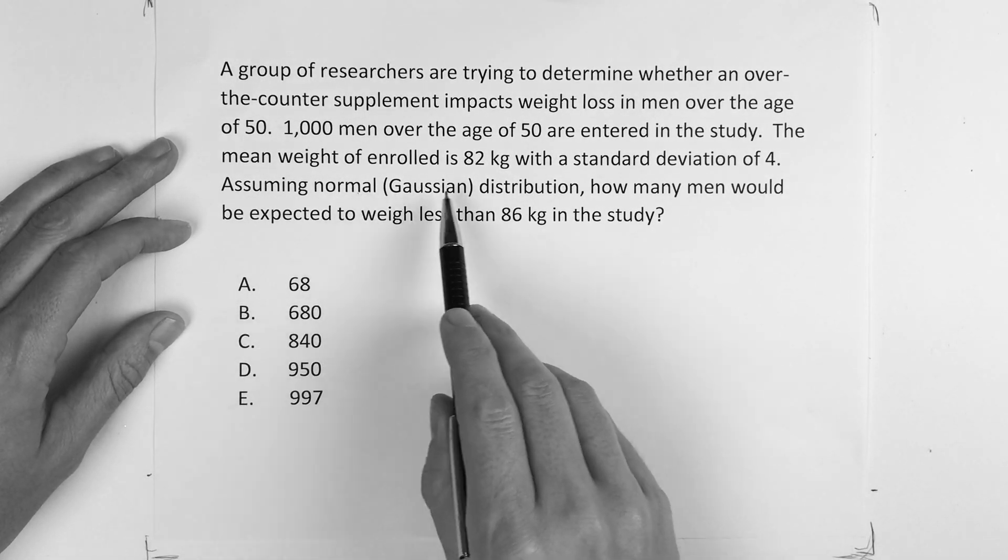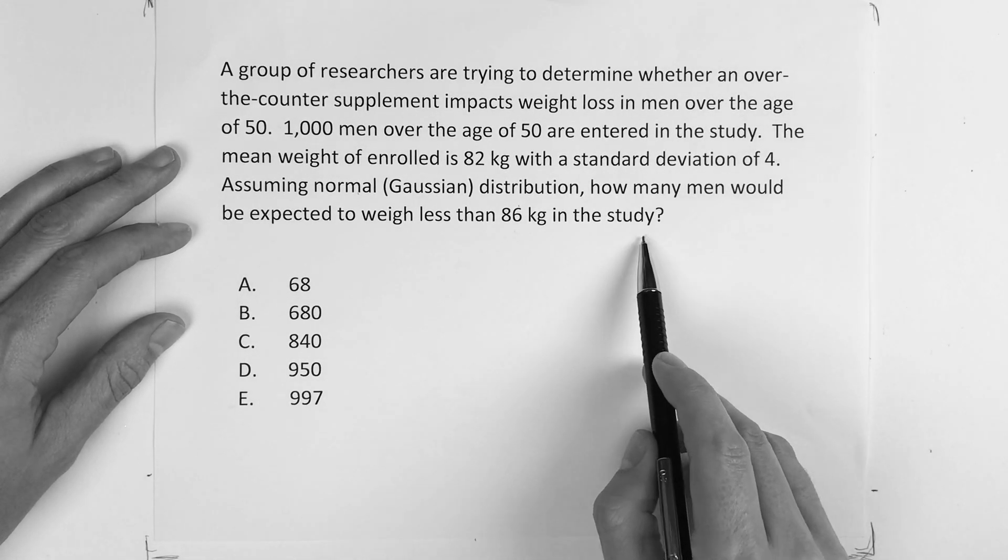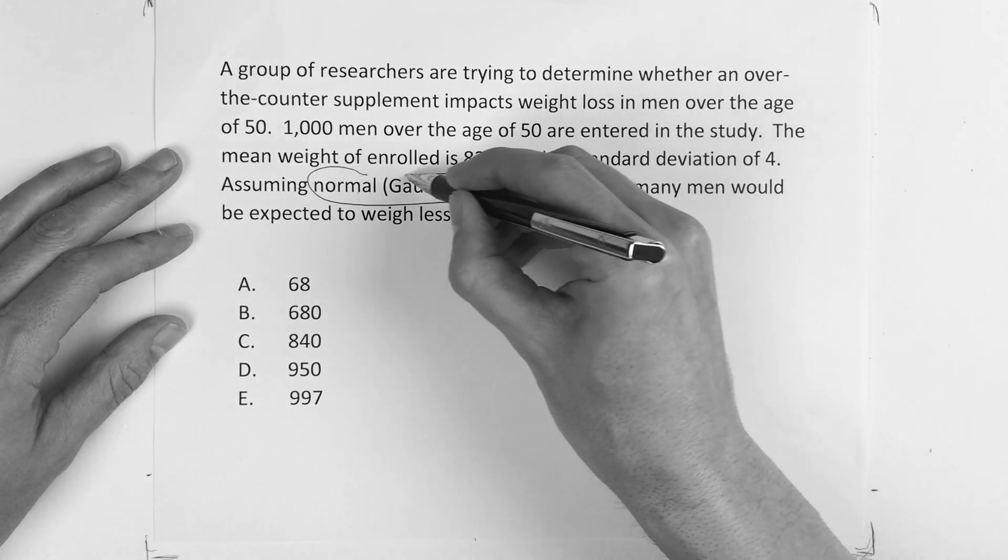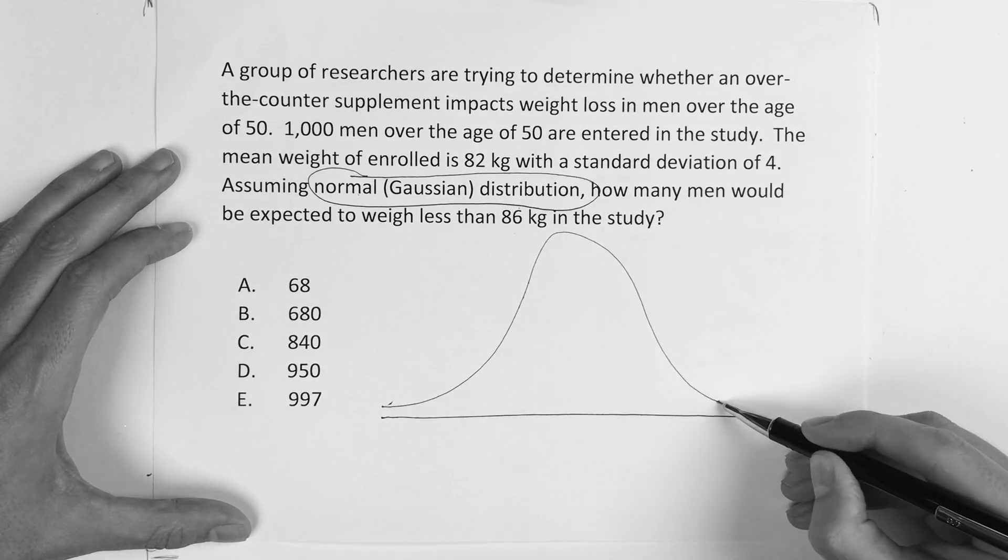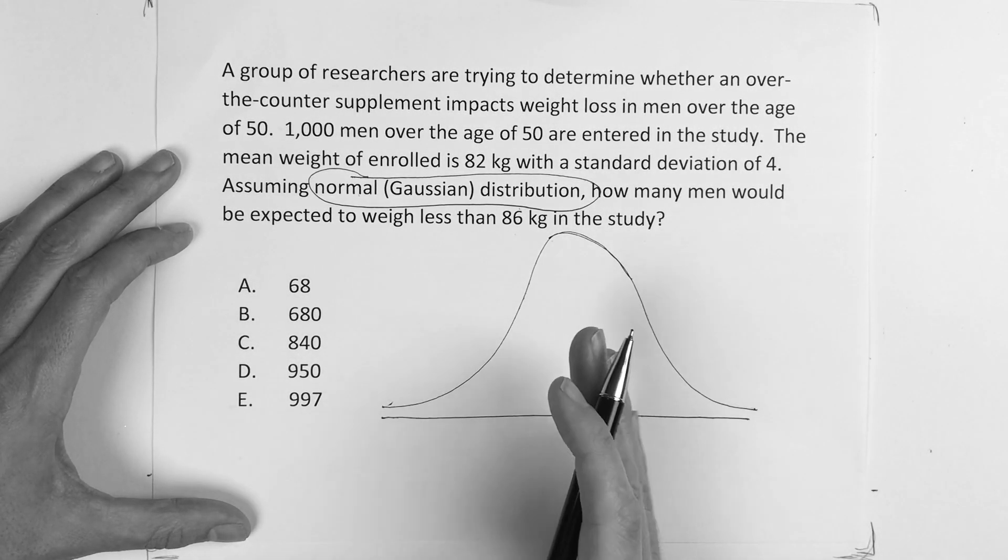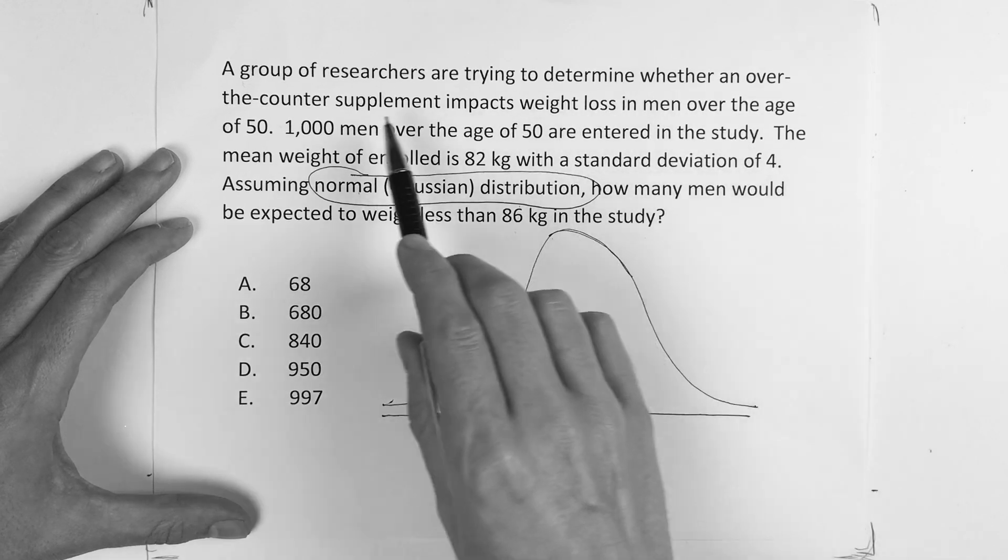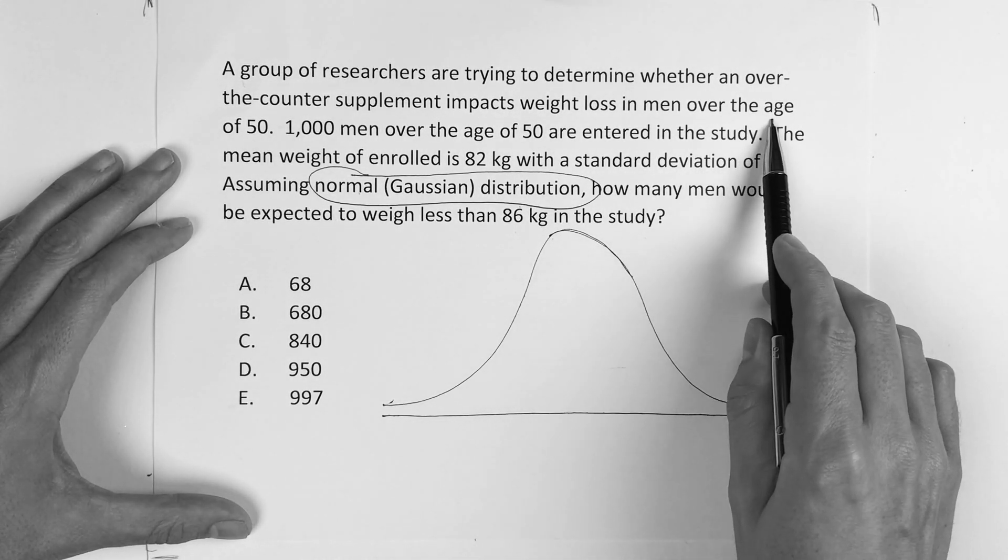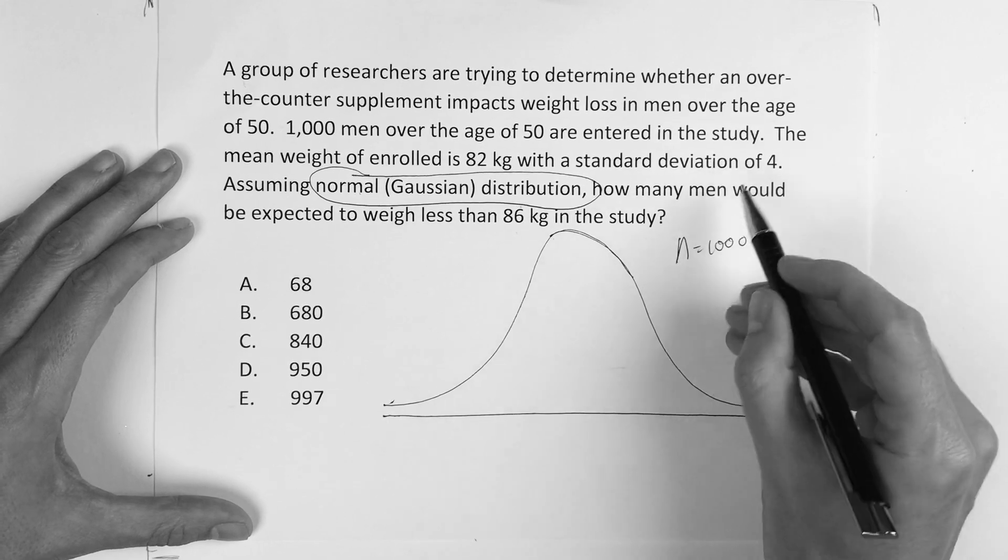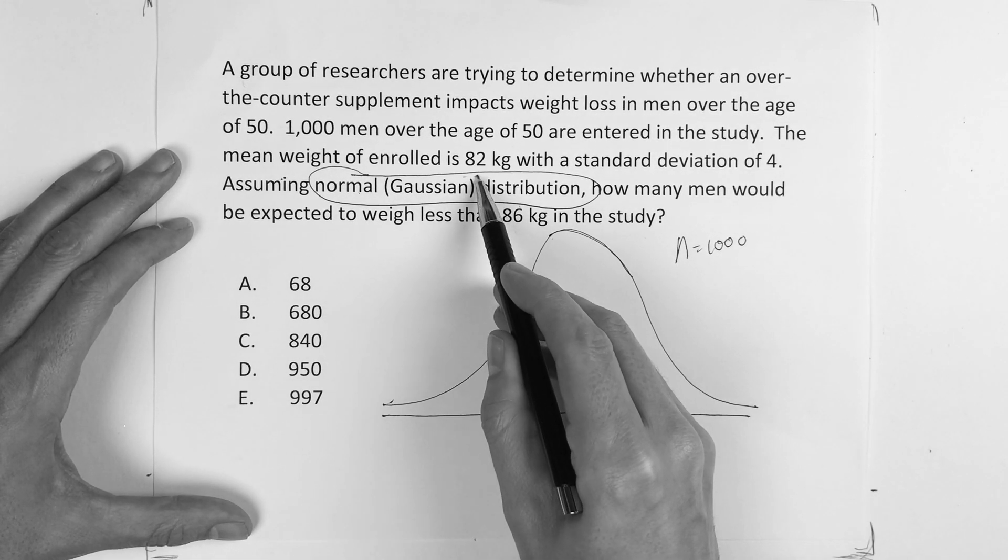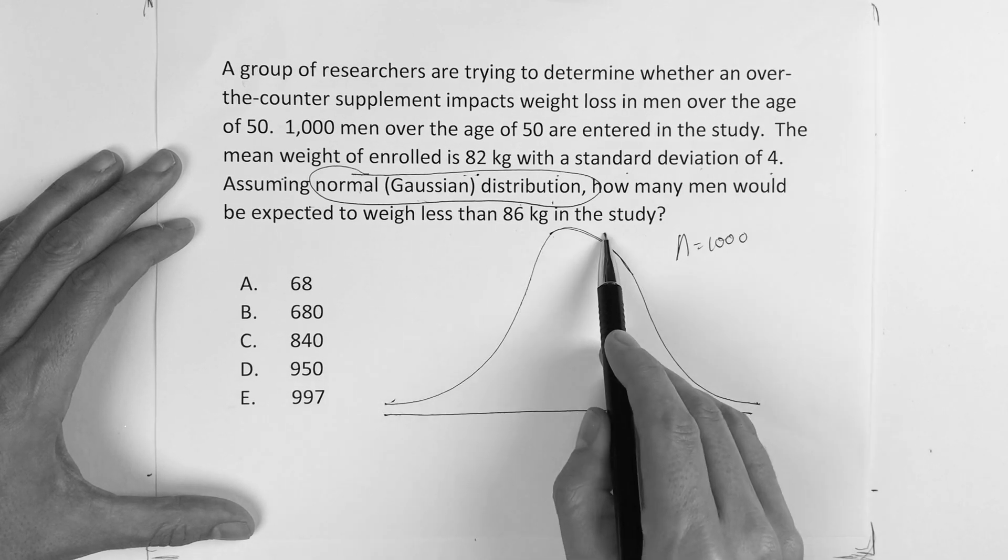Alright guys, so it says: assuming normal Gaussian distribution, how many men would be expected to weigh less than 86 kilograms in the study? So far we know we're talking about normal distribution. A group of researchers are trying to determine whether an over-the-counter supplement impacts weight loss in men over the age of 50. 1,000 men over the age of 50 are entered in the study, so n equals 1,000. The mean weight of enrolled is 82 kilograms with a standard deviation of 4.